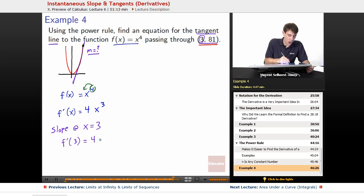f prime of 3 will be 4 times 3 cubed. We plug it into our f prime, our derivative function. f prime of 3 equals 4 times 3 cubed. 4 times 3 cubed, 3 cubed is 27. 4 times 27 equals 108.